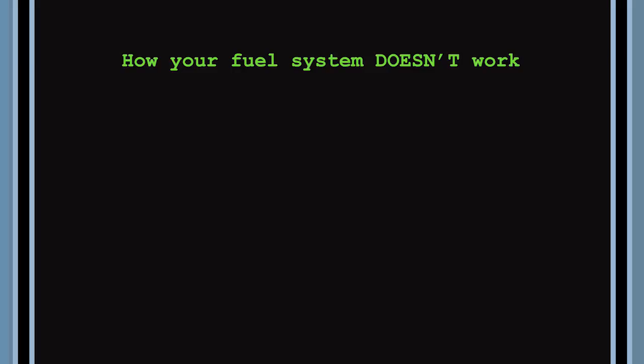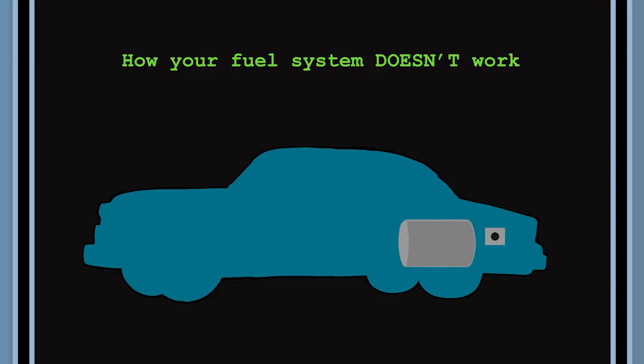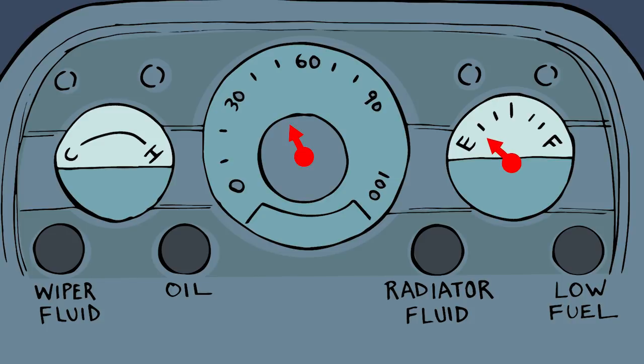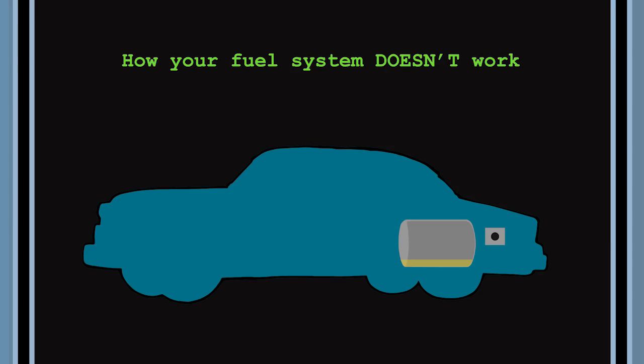When I was a kid, I thought our digestive systems worked something like the gas tank in a car. Fill the tank with food and your body burns it for fuel. When the tank is nearly empty, the low fuel light starts flashing and you get hungry again. In fact, your body's fuel system is almost nothing like a car's.